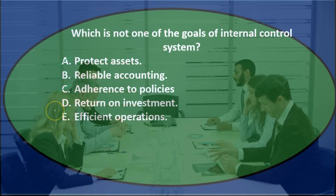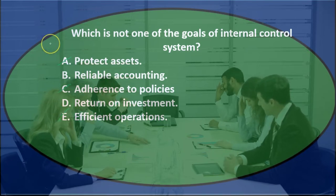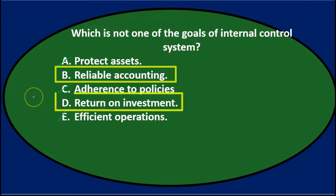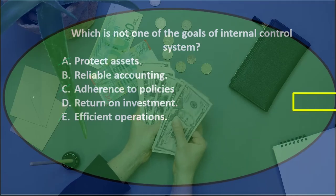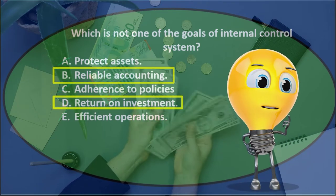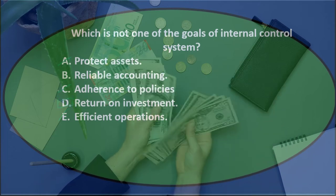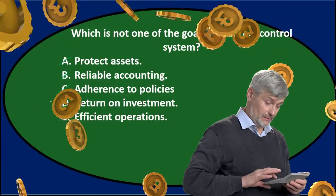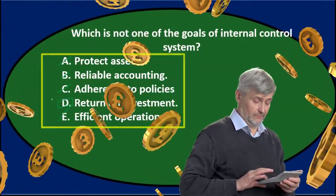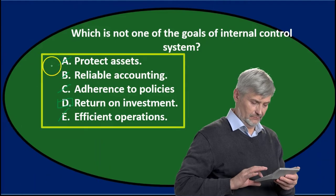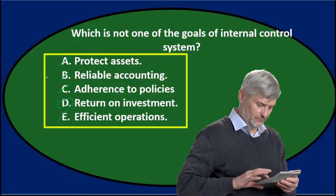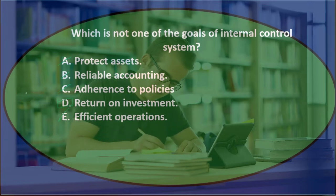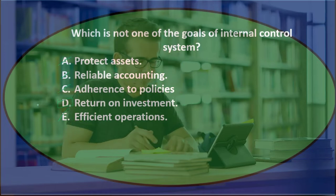So we're left with B and D — reliable accounting and return on investment. The question is: which is not one of the goals of an internal control system? Both are things a company wants, but internal controls are not specifically designed for return on investment. We're typically looking at internal controls to protect assets, have reliable record keeping, adhere to policy, and have efficient operations — which may lead to return on investment, but that's not typically the specific goal of the controls themselves.